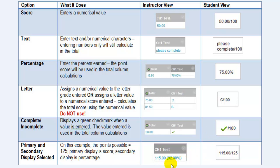This last example shows the primary and secondary displays. In this case, the primary display is set at score and the secondary display is set at percentage. Note that the student only sees the primary display.